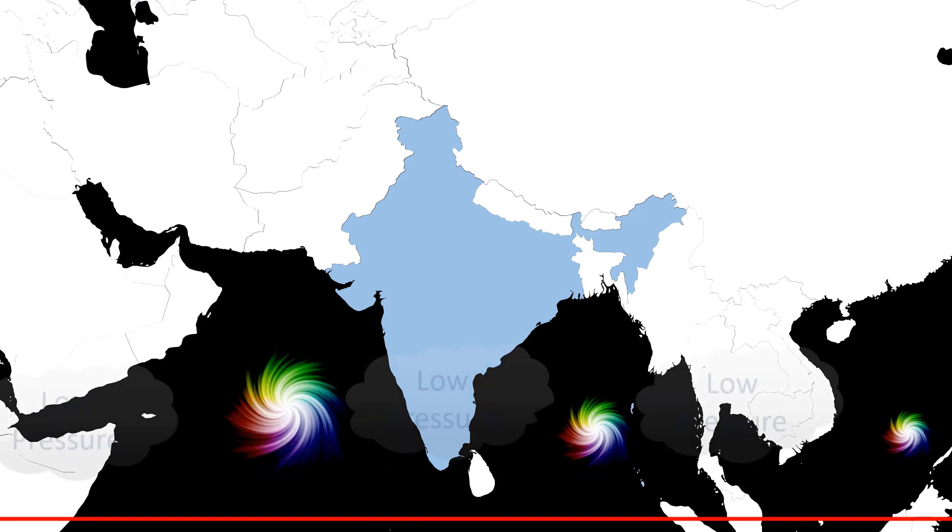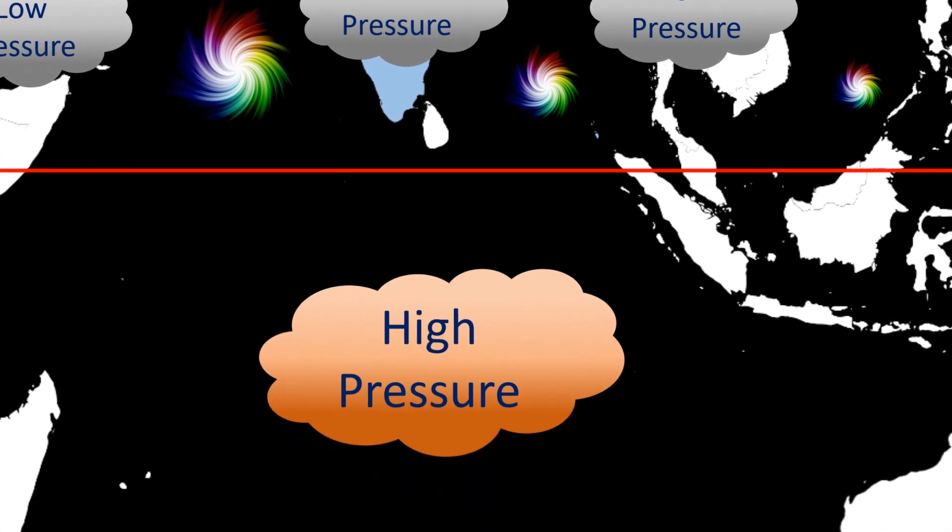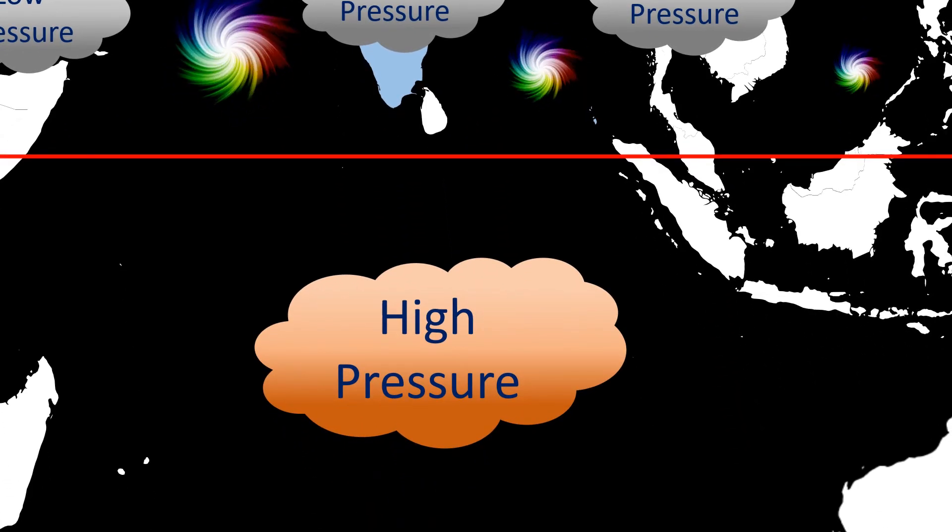High temperatures create low pressure, which signifies less air in that area. Whereas the southern hemisphere, being a bit cool, experiences high pressure. By pressure, we mean the air pressure.